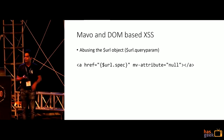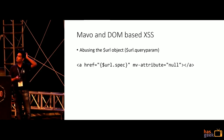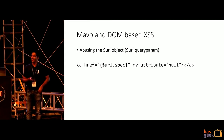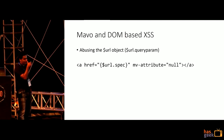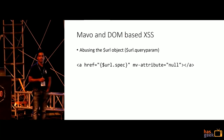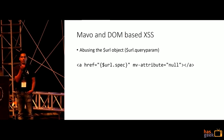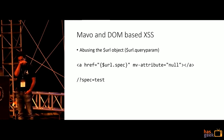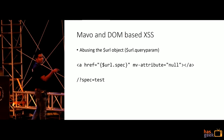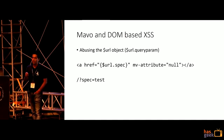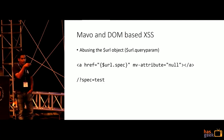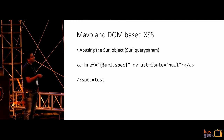There is a framework called Mavo — fairly new. In Mavo, there's a URL object you can access using $url.parameter. So $url.A gives you access to the 'A' parameter in the URL. If you have 'spec' with value 'test', you can access the value 'test' by doing $url.spec. The vulnerability that was discovered was that if you use $url.spec directly in code without sanitization, it leads to a cross-site scripting issue.